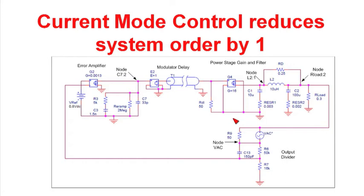One more thing we need to look at is this output divider. In this output divider we have a resistor in parallel with C13. At some frequency the capacitance reactance and the resistance are going to be equal. That's going to set a zero in the control loop.